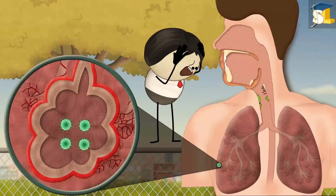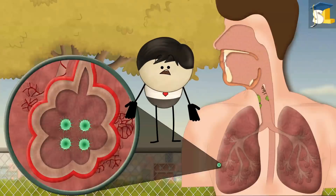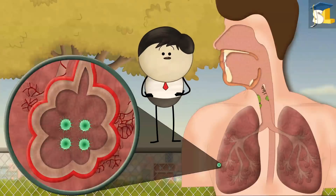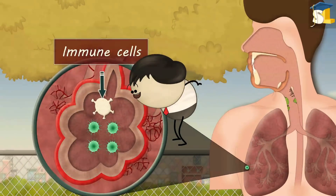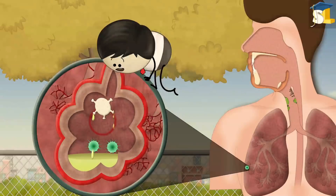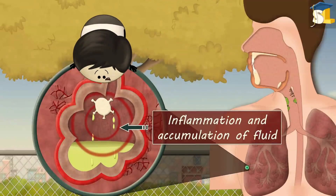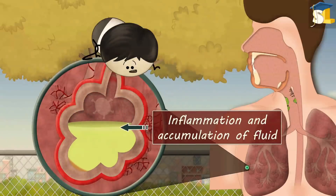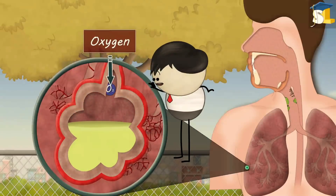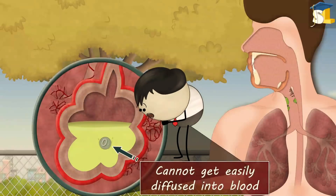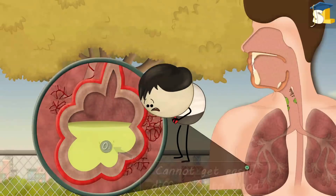Oh no, now what do we do? Now, to protect ourselves, the immune cells start attacking the microorganisms, causing inflammation and accumulation of fluid in the alveoli. As a result, the inhaled oxygen cannot get easily diffused into blood.